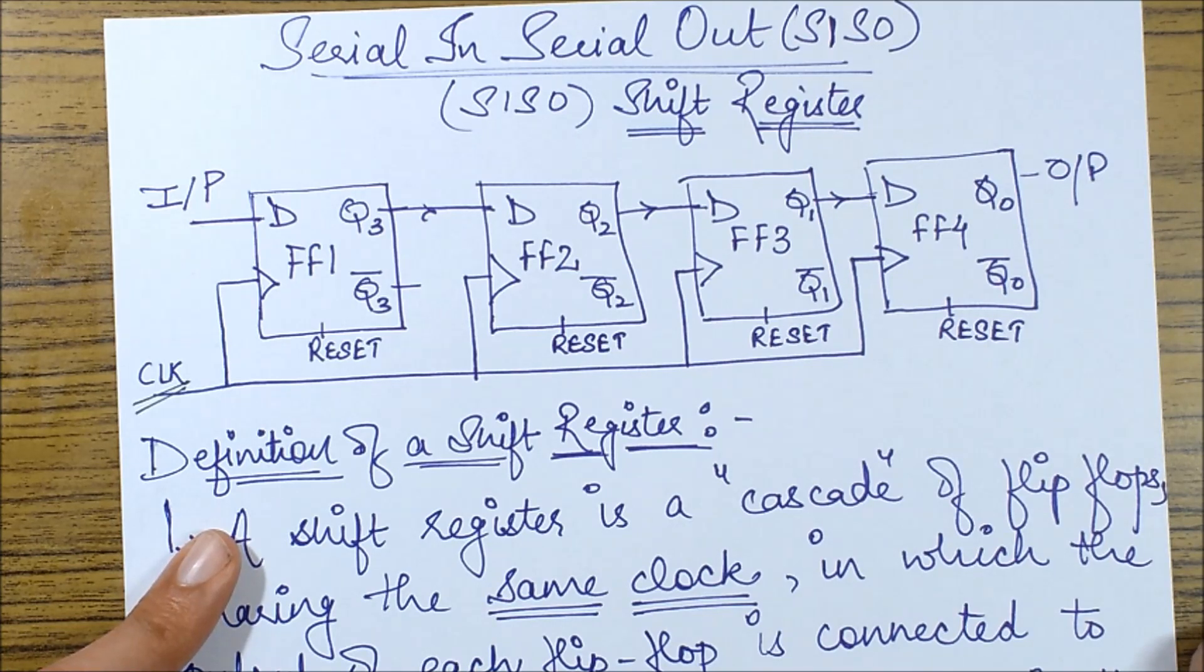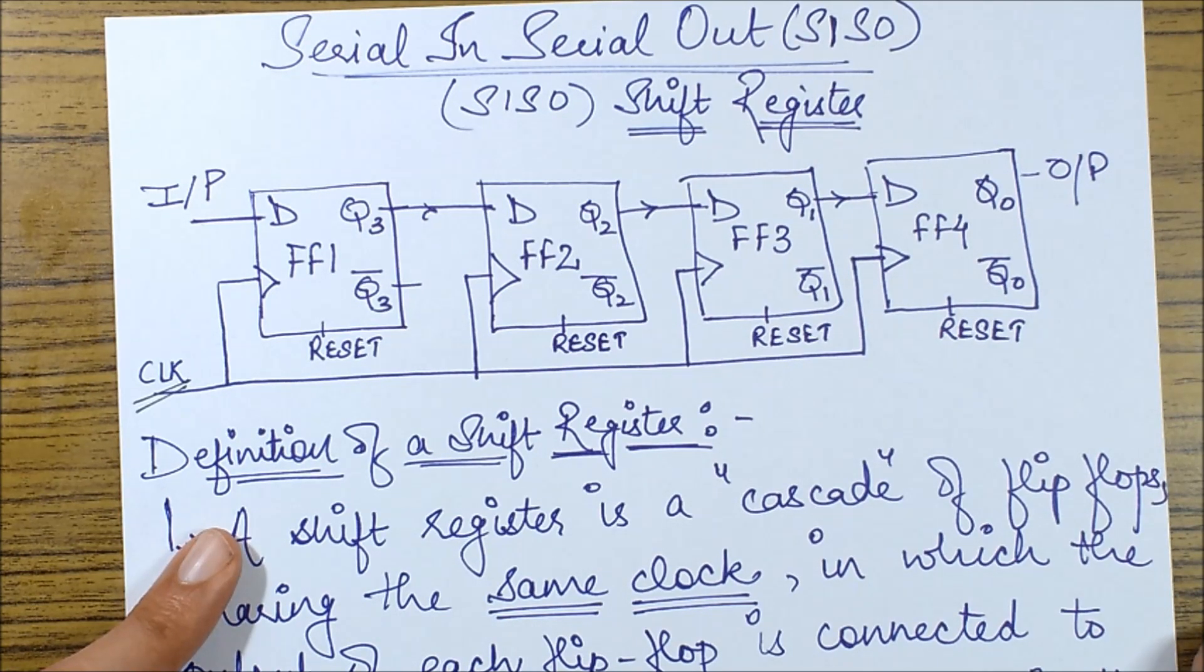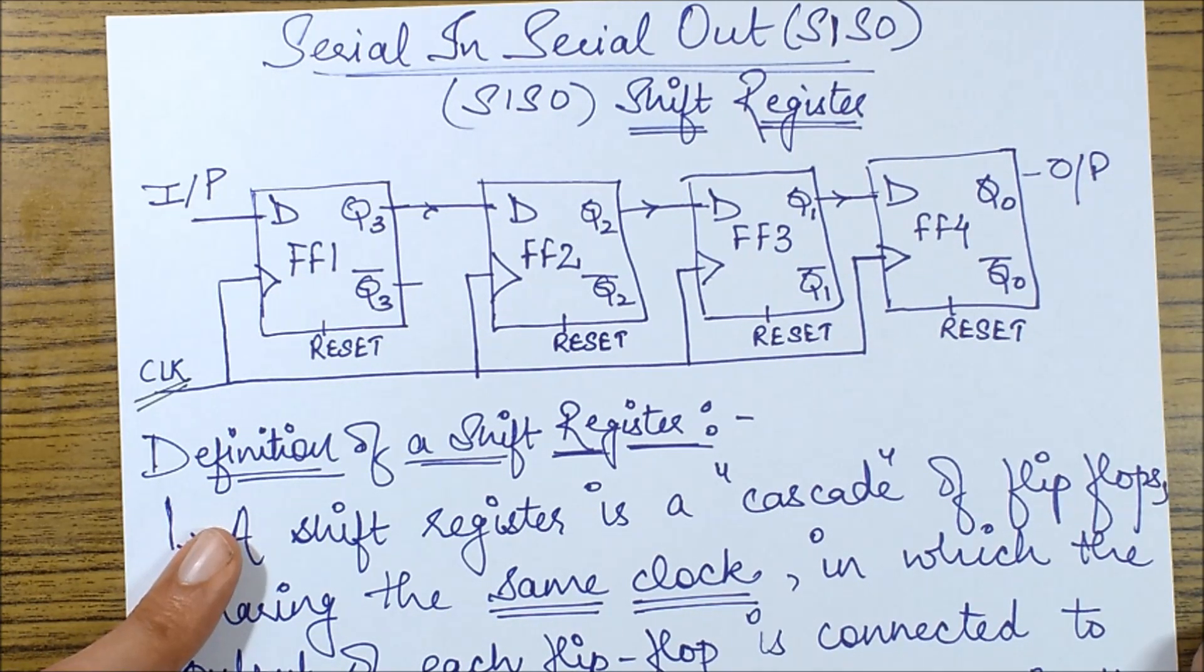So this register is being formed with a combination of four flip flops, that means it must have been used to represent a 4-bit data because we know that for an n-bit data we need n flip flops.